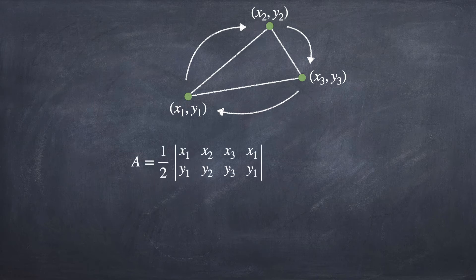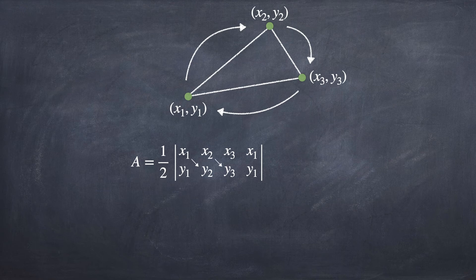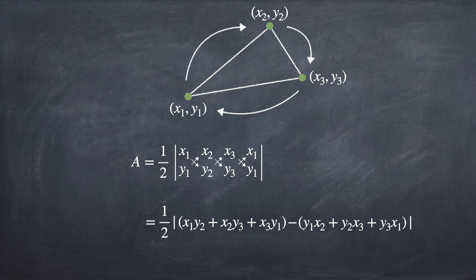The formula of the area is 1 over 2 multiplied by the modulus of x1y1, x2y2, x3y3, and x1y1. The modulus term can then be simplified by taking the sum of x1y2, x2y3, and x3y1, minus the sum of y1x2, y2x3, and y3x1. Let's try to use this formula to find the area.